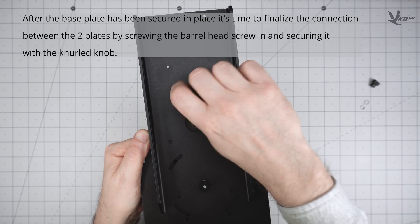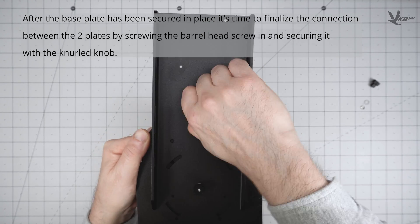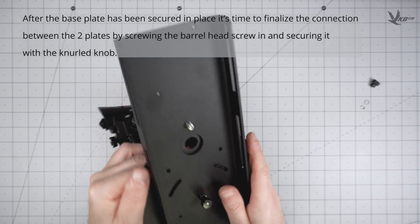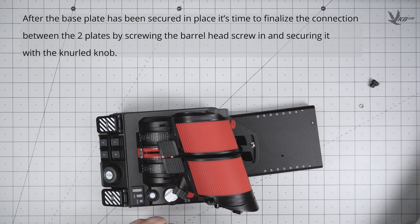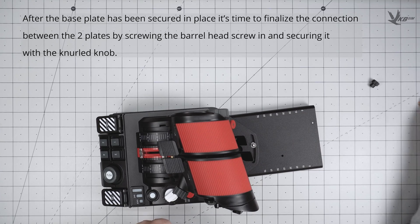Screw the barrel head screw in, bottoms up, then from the top, drop in the spring washer, the flat washer, and the knurled nut. After adjusting the angle to your preference, make sure you tighten down both knurled nuts.